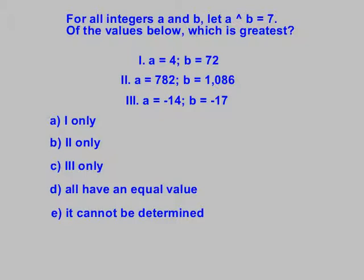The key here is to focus on the rule you're given. It says a arrow up b = 7. Well, if I put a 4 in for a and a 72 in for b, what do I get? 7. If I put a 782 in for a and a 1,086 in for b, what do I get? 7. Nothing changes that 7 on the right-hand side of the equation.